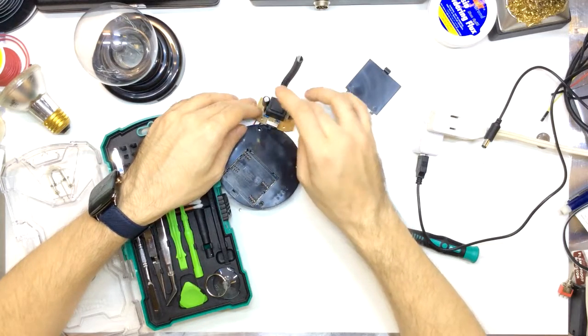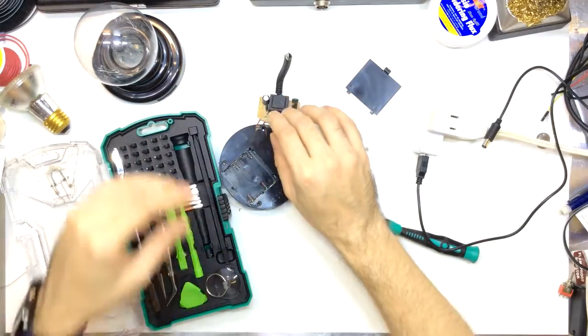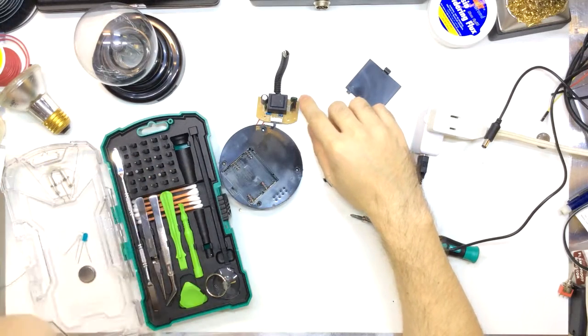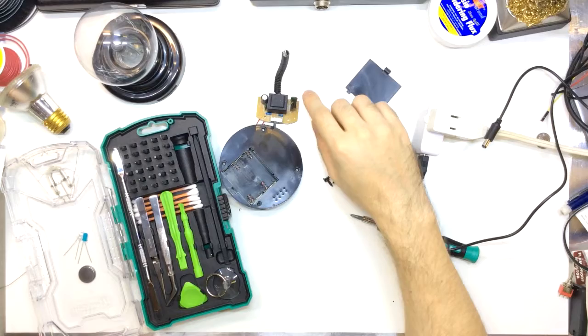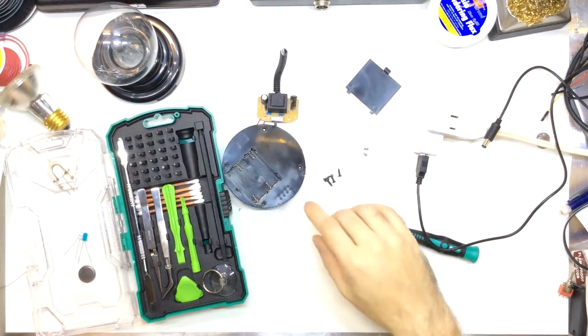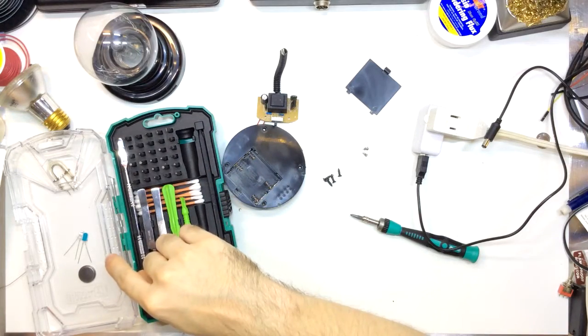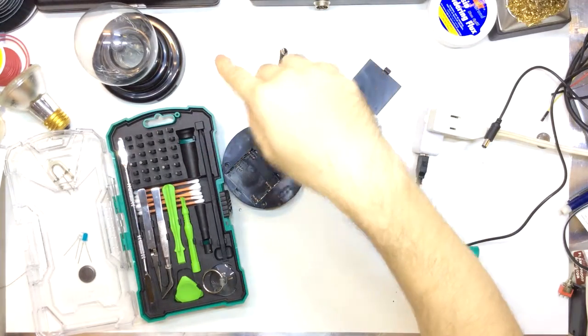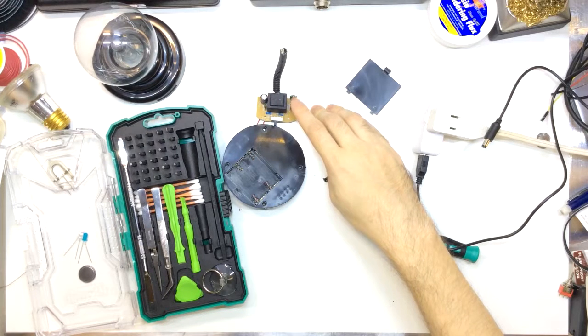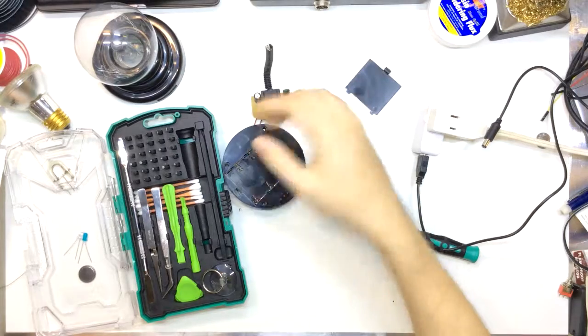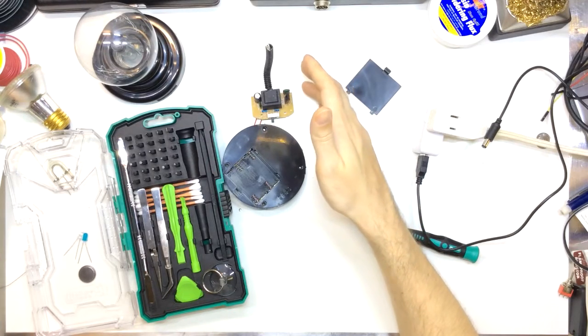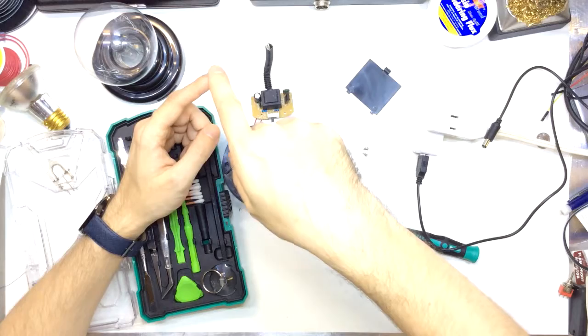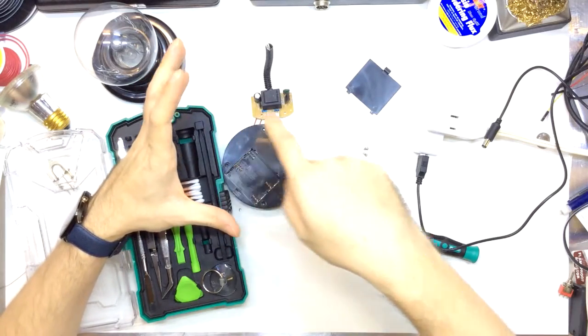What they do is they use something called a flyback transformer. Which has two windings on it. One that charges when the transistor is active. And one that charges when the transistor is not active. And so you'll get one side of the flyback transformer charges up. The windings on it charge up. They build up their magnetic field. And then, at a point, the current sets this transistor into... depending on how they have the circuit set up, it either closes the transistor or opens the transistor, cutting power to the primary. And then the secondary immediately charges up from the collapse of the magnetic field on the primary and then begins to discharge.